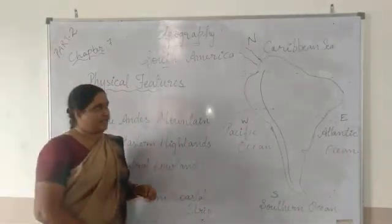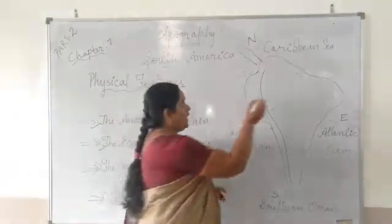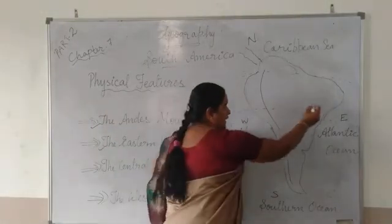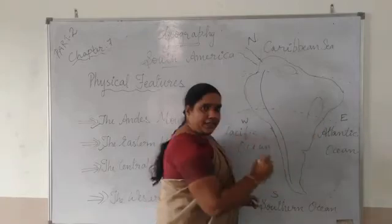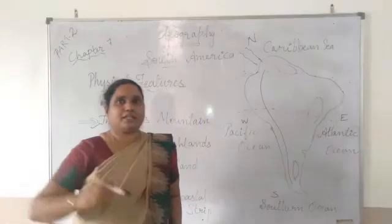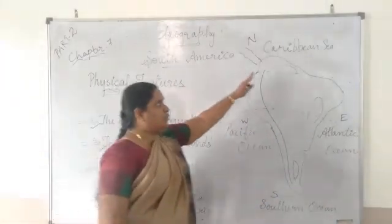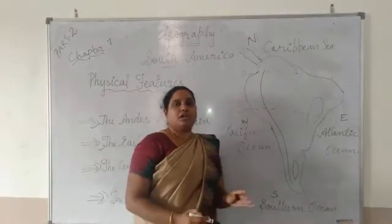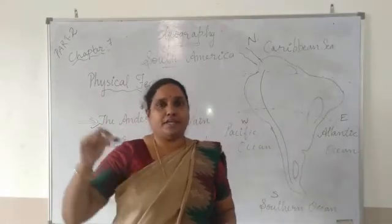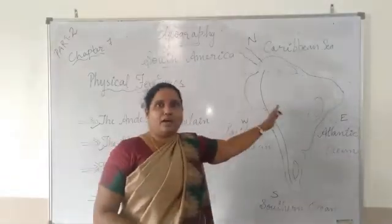The Eastern Highlands are three in number. The first one is the Guiana Highlands, here in the northeast. Then the Brazilian Highlands in the central-east portion. The Guiana Highlands are very important because the Salto Angel Falls, which is the highest waterfall in the world, can be seen there.